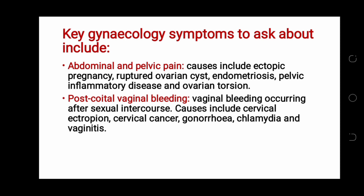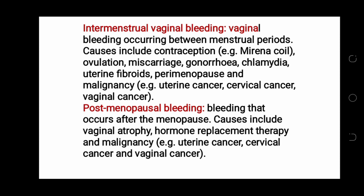Postcoital vaginal bleeding — bleeding occurring after sexual intercourse — can be due to cervical ectropion, cervical cancer, gonorrhea, chlamydia, and vaginitis. Ask about intermenstrual vaginal bleeding, occurring between menstrual periods, which can occur due to Mirena or coil, ovulation, miscarriage, gonorrhea, chlamydia, uterine fibroids, perimenopause, and malignancy such as uterine, cervical, or vaginal cancer. Post-menopausal bleeding occurring after menopause can be caused by vaginal atrophy, hormonal replacement therapy, and malignancy such as uterine, cervical, or vaginal cancer.